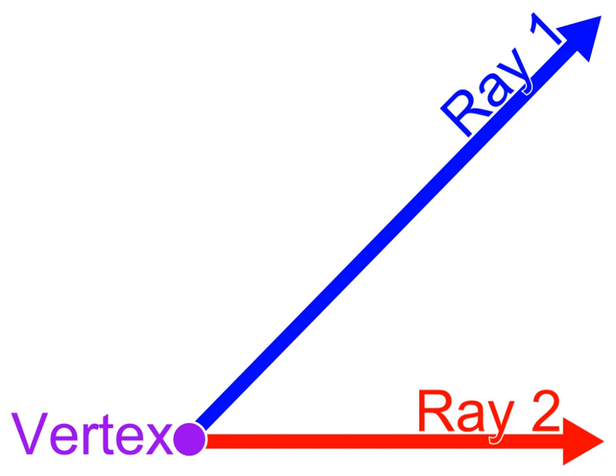A transversal is a line that intersects a pair of lines and is associated with alternate interior angles, corresponding angles, interior angles, and exterior angles.